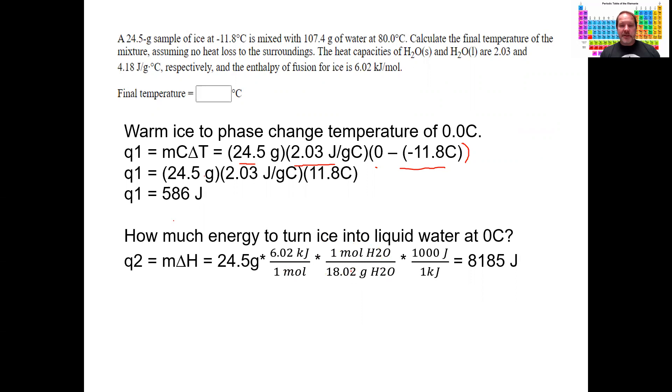So I'm going to just convert the one mole into 18.02 grams of water, and I'll convert the kilojoules into joules. So it turns out to be 8,185 joules. Now if I add those two together, that's the total amount of heat that I need to put into it to heat it up to ice and to melt it into water.